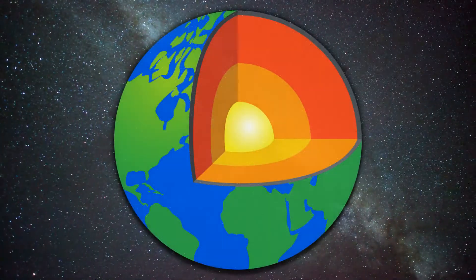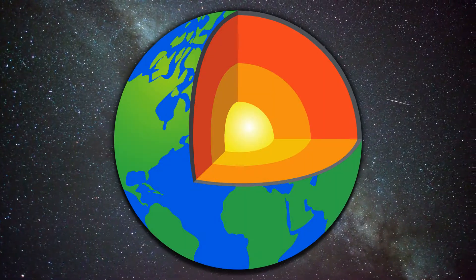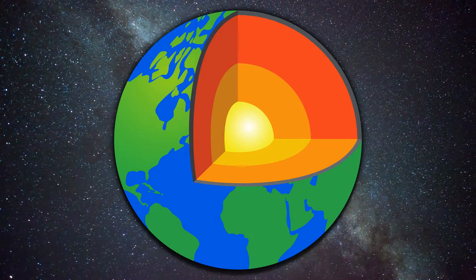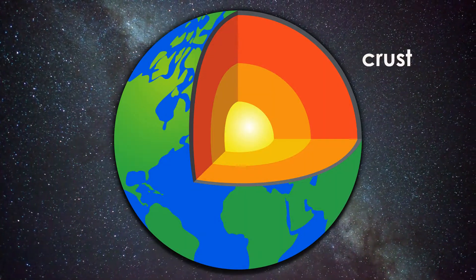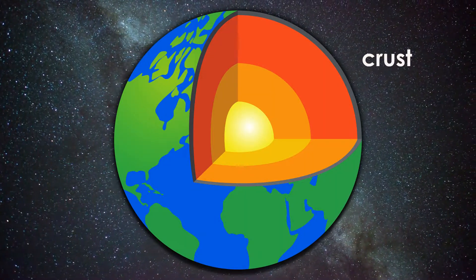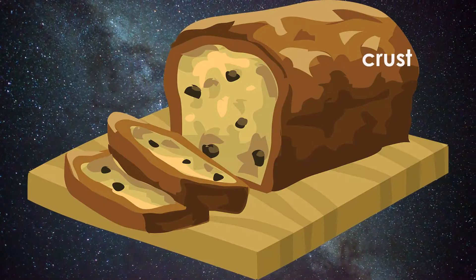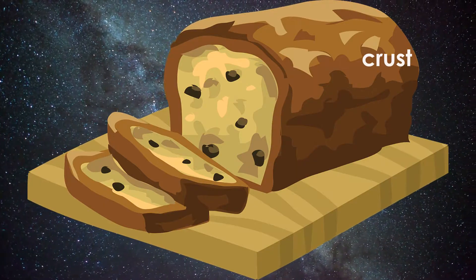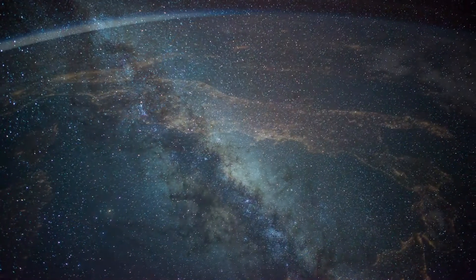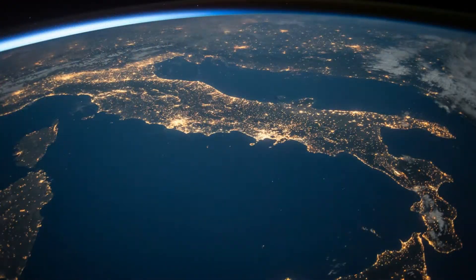The solid top layer of the earth is called the crust — just like the outside of a loaf of bread. We live on the crust.